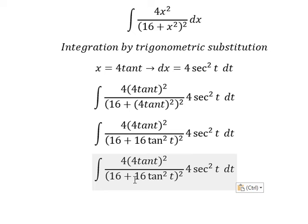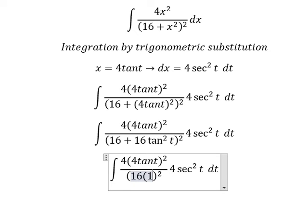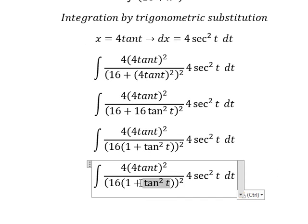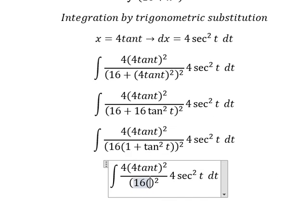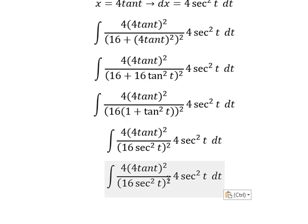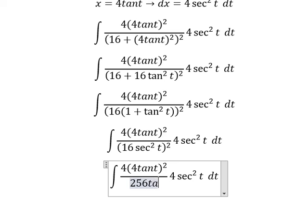16, we can do factorization. This one we change by secant squared t. So this one we have 256 times secant t to the power of 4.